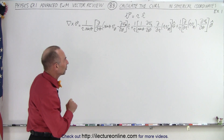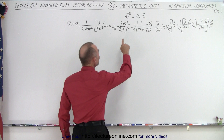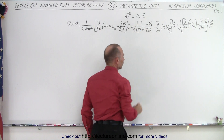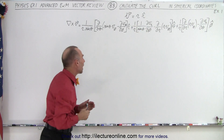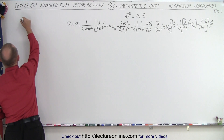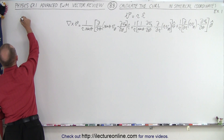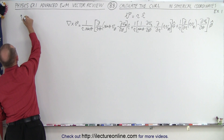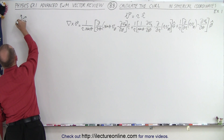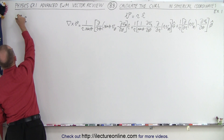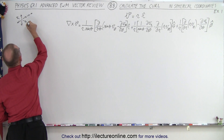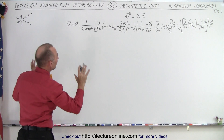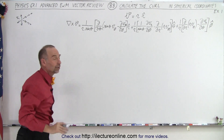Notice the function itself: V equals R in the R direction. In other words, it's a function that's radially outward. Here's the origin — you can see that the vector function simply points radially outward from the origin. The magnitude gets smaller and smaller as we go further and further out. But that's the function we're dealing with.